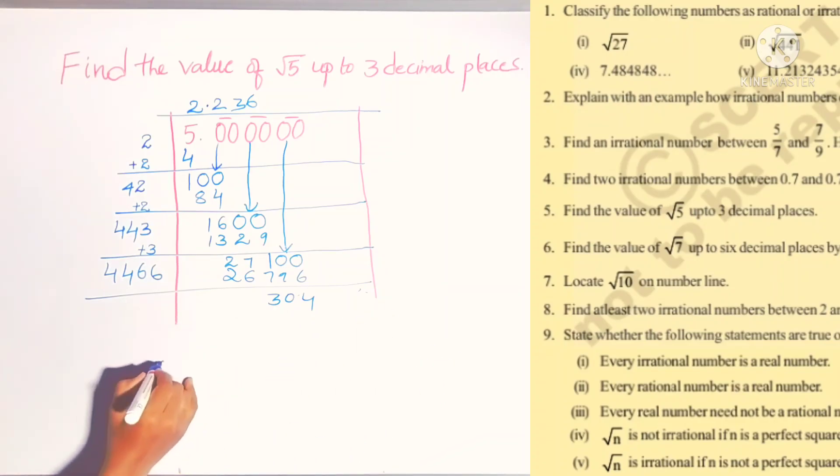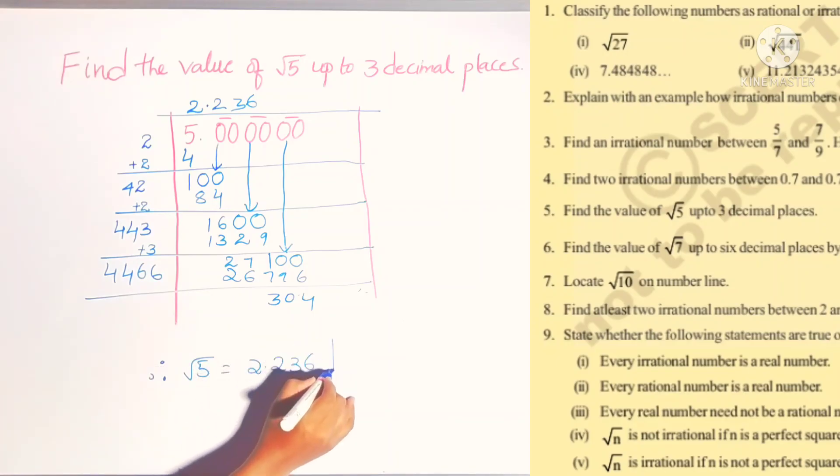Therefore, square root of 5 is equal to 2.236 up to 3 decimals. So I think you understand this problem. Please like this video and share it with your friends, and please subscribe to my channel. Thank you for watching.